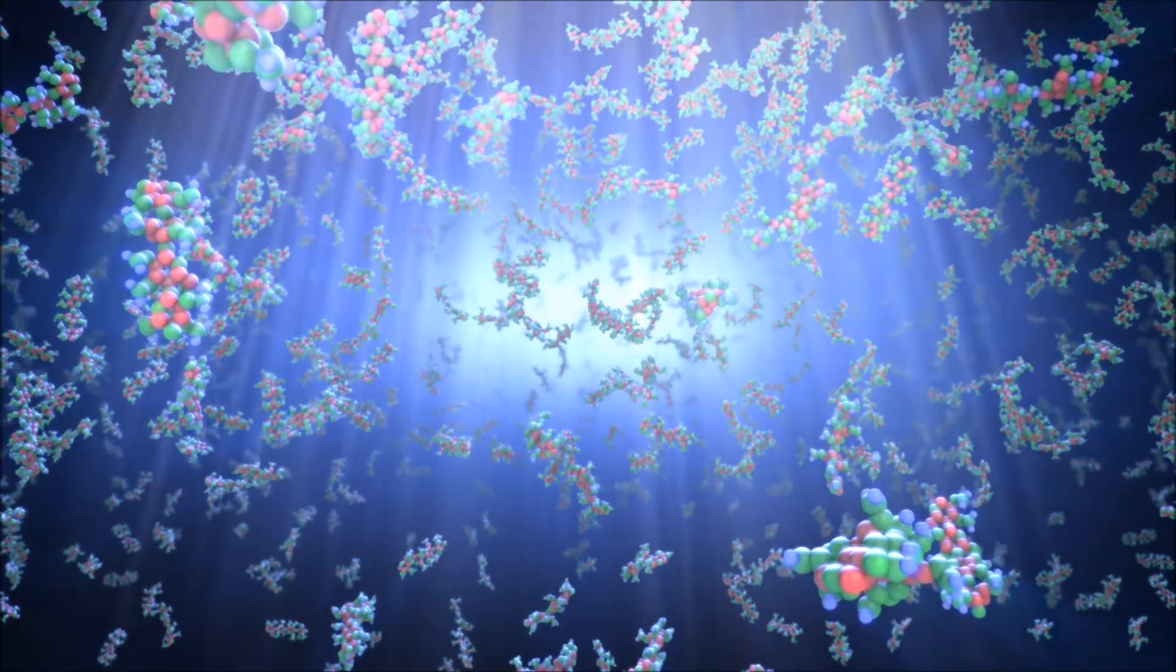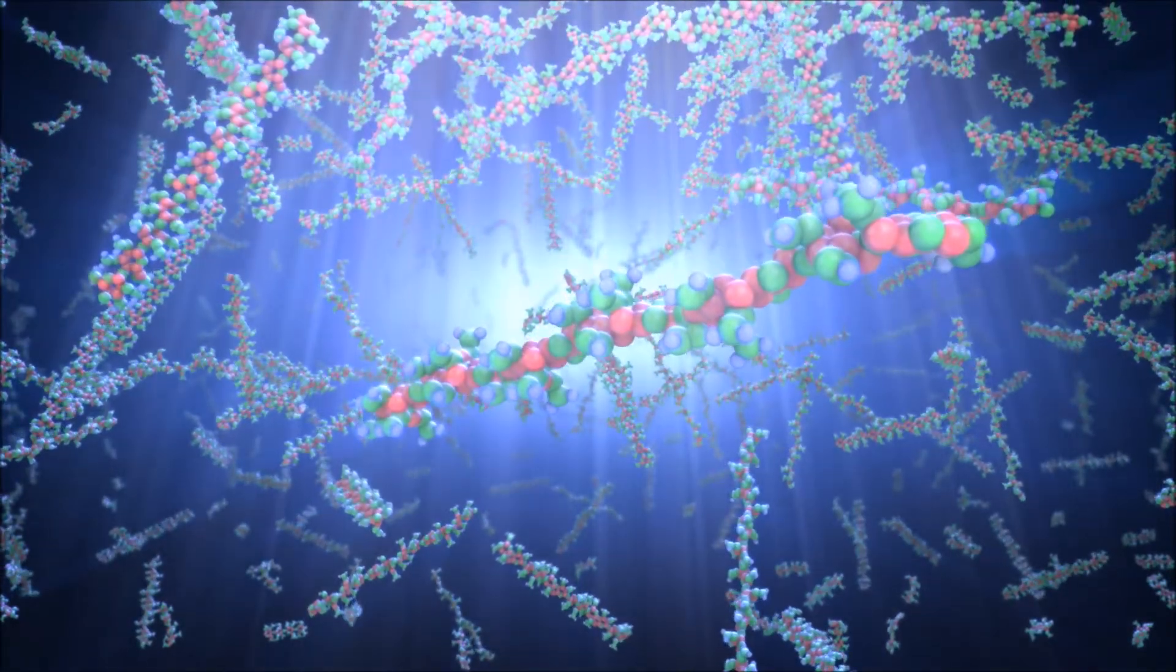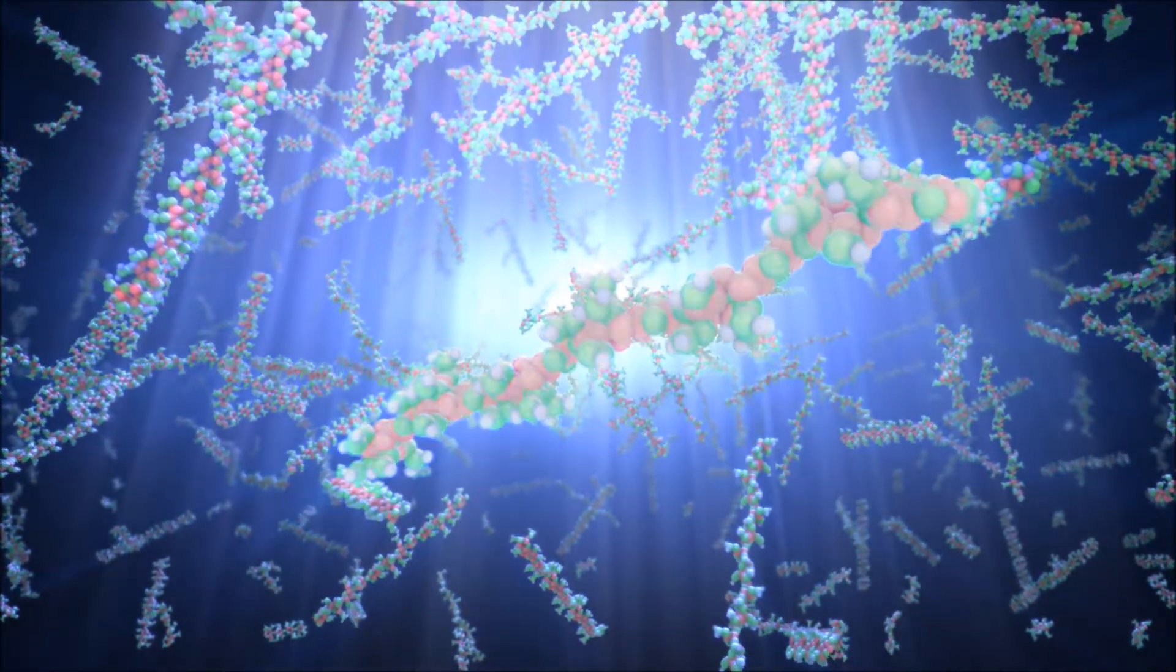When light is directed to a specific area of the lens, macromers in the path of light attach to the ends of other macromers, forming polymers.